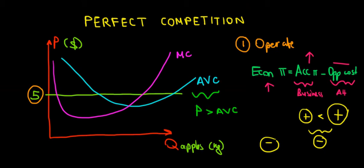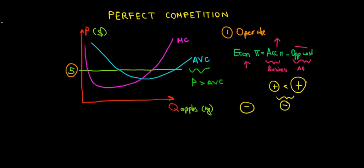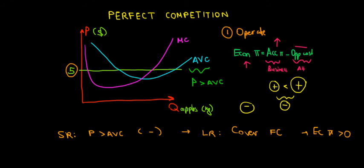The reason it's still worth operating is that in the short run, price greater than average variable cost means we can still have negative profits temporarily. But in the long run, by compensating the average variable cost we're also going to cover our fixed costs. This is typical for brick-and-mortar businesses that invest in facilities — they have negative profit at the start but expect to recover over time.